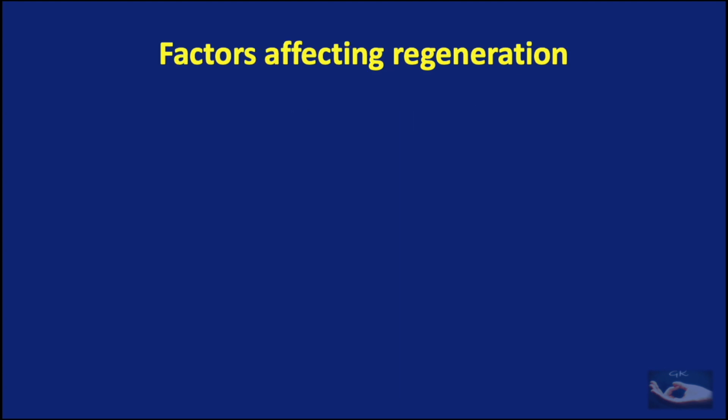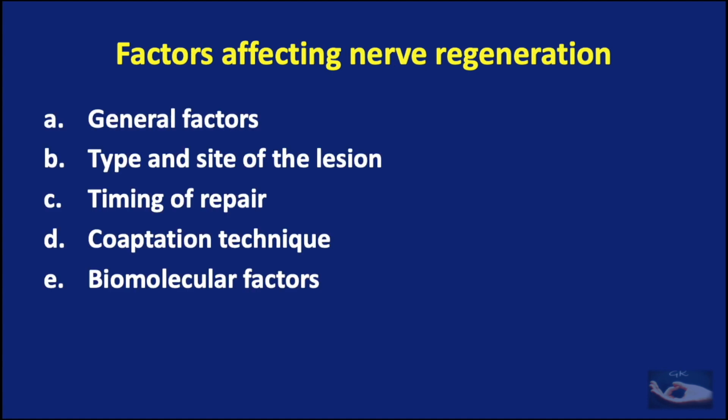This process of nerve regeneration is a very delicate one and can be affected by many factors, broadly classified into: general factors, the type and site of the lesion on the nerve, the timing of the repair, the coaptation technique, and biomolecular factors.